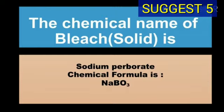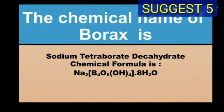The chemical name of bleach solid form is sodium perborate and chemical formula of bleach is NaBO3. The chemical name of borax is sodium tetraborate decahydrate and chemical formula of borax is Na2B4O5(OH)4·8H2O.